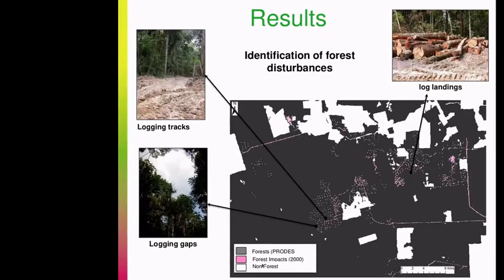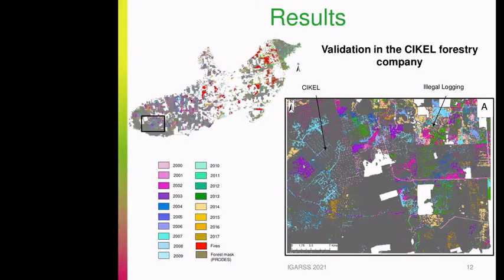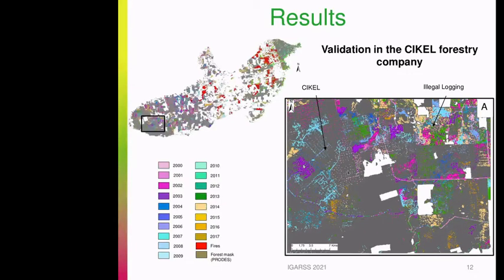You can see a typical case of conventional logging in the Cikel company with a management plan — the pattern presents an organized structure. You can also see an illegal logging area with a more random and less spaced-out impact structure. The logging impacts located in the Cikel company are in accordance with their management plan: the year of detected impacts corresponds to the year indicated in the Cikel data. Each area of Cikel is only exploited occasionally, while the illegally exploited area was exploited several times during the period using a random structure.